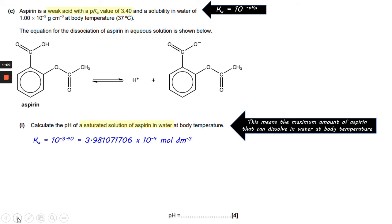That means the maximum amount of aspirin can dissolve in water at body temperature. So we have a number that can be used to work with that. It says that 1 times 10 to the minus 2 grams per cm³ is the solubility of aspirin, the maximum amount that can actually dissolve in water at body temperature.